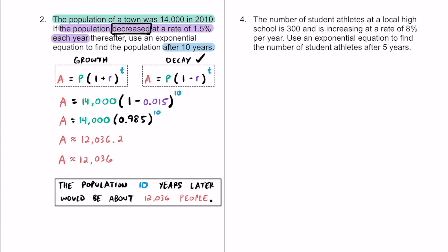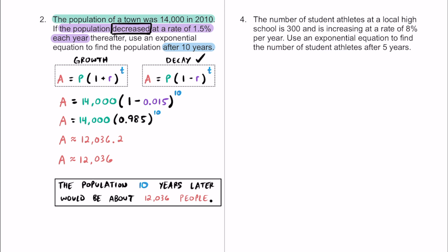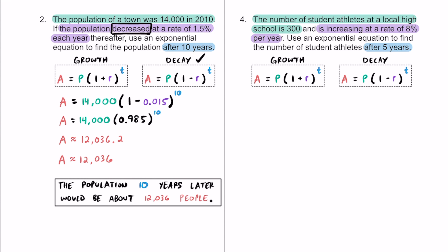Here's one more problem. The number of student athletes at a local high school is 300 students initially, and it's increasing at a rate of 8% per year — so the amount of student athletes is going up over time. We'll use an exponential equation to find the number of student athletes after five years. The original number of students is 300, the rate of change is 8% per year, and we're looking at projections after five years.